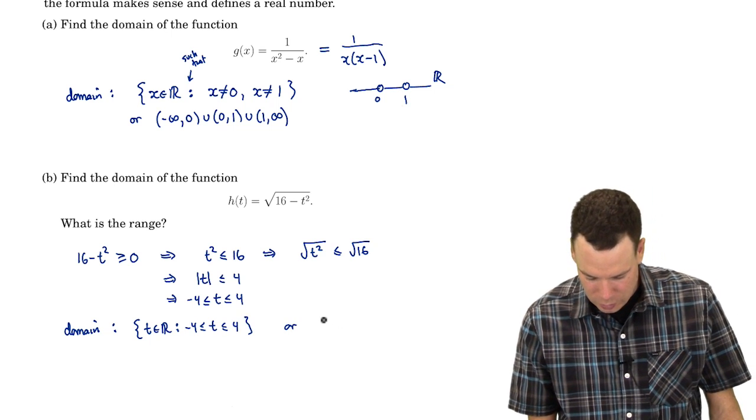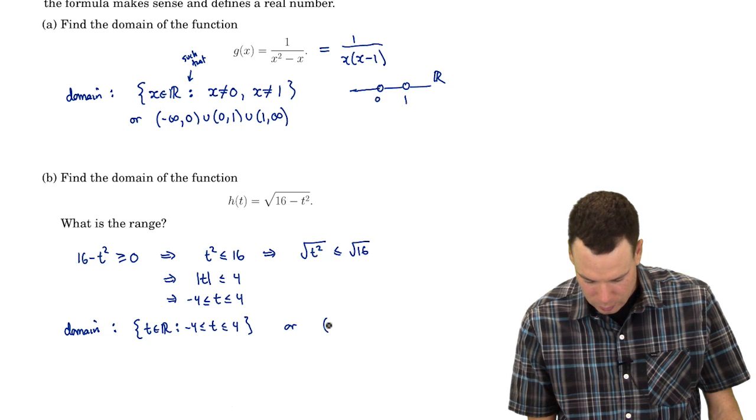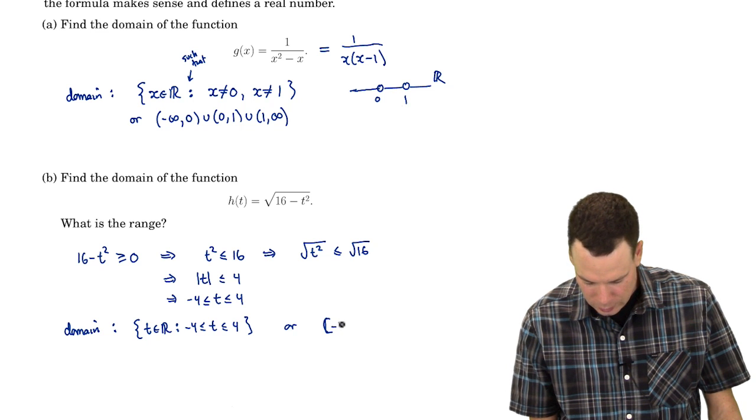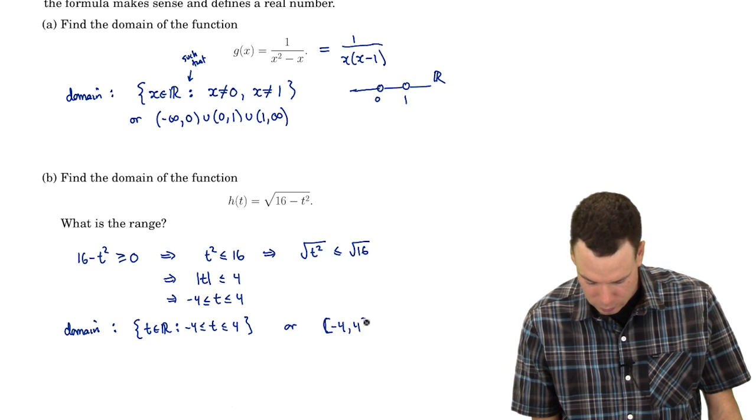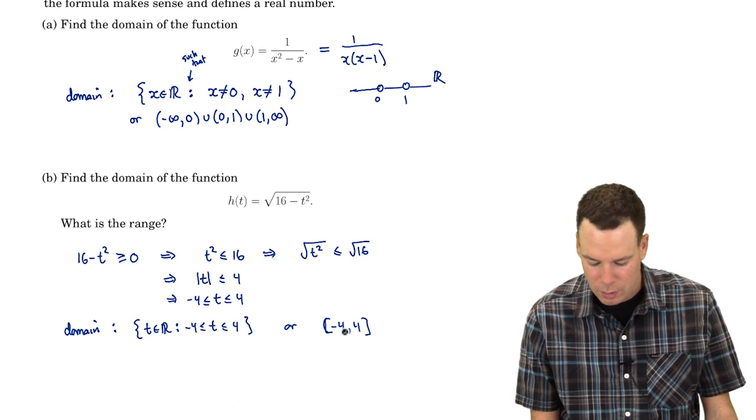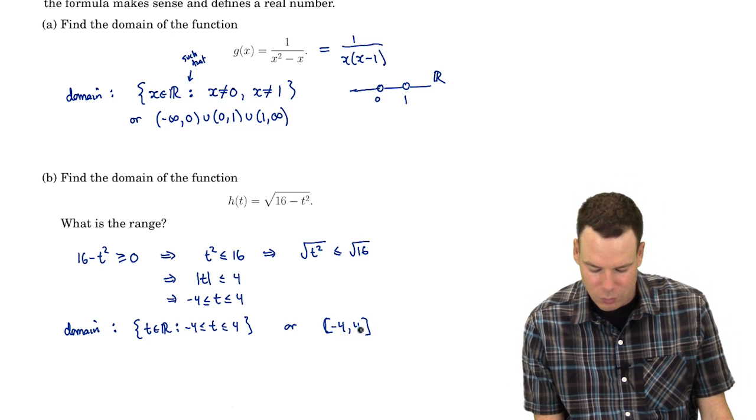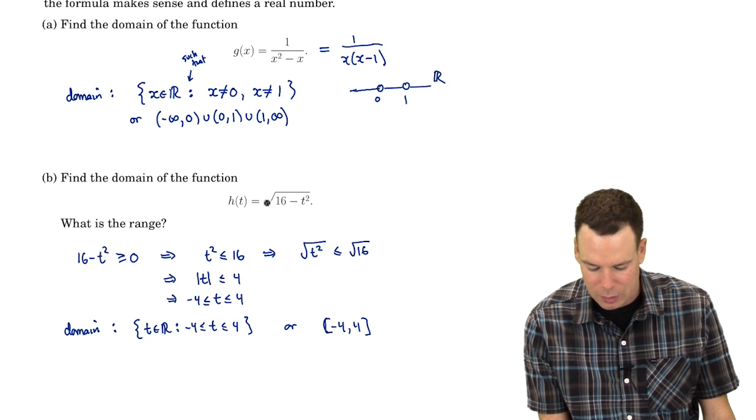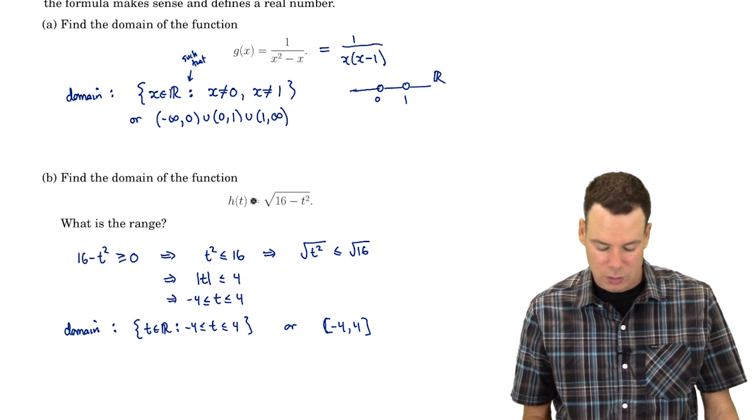In interval notation, it's [-4, 4]. We use square brackets because we can include -4 and 4 in the domain; if I plug them in, I just get the square root of 0, so h is 0 at those points.